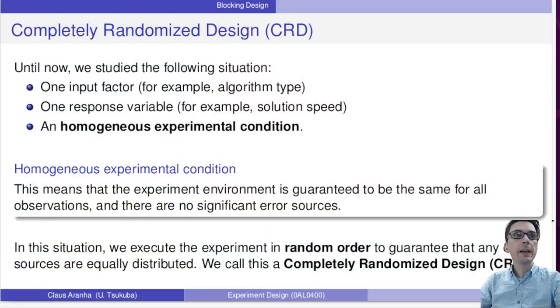Until now, we have studied the following situation: one input factor, for example the algorithm type; one response variable, for example the solution speed; and a homogeneous experimental condition. What does this mean? When I say homogeneous experimental condition, I mean that the experiment environment is guaranteed to be the same for all observations and there are no significant error sources.